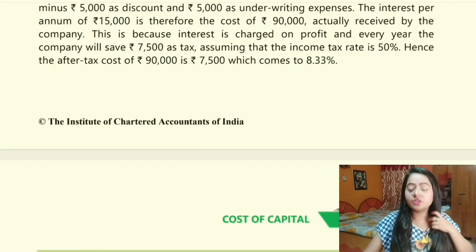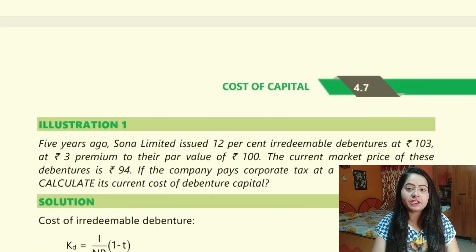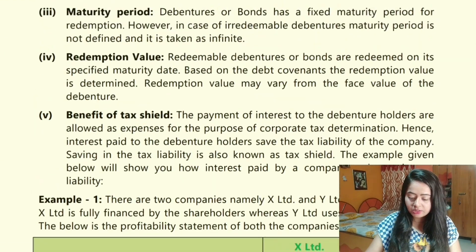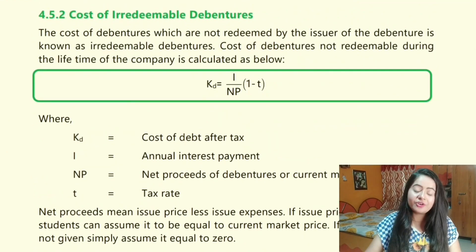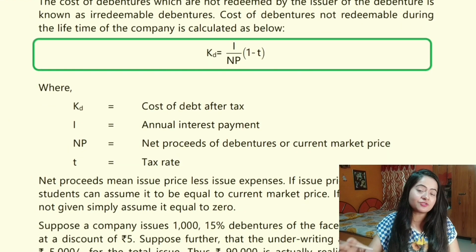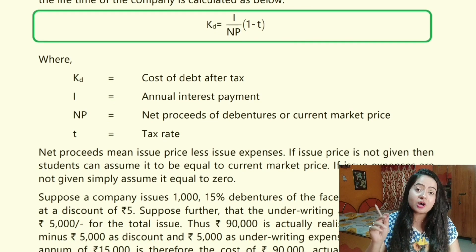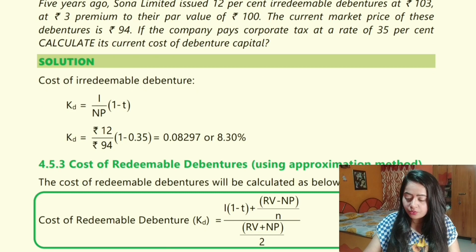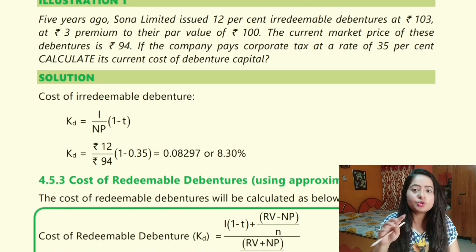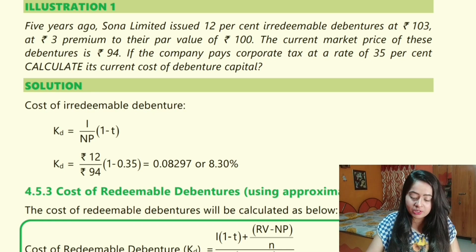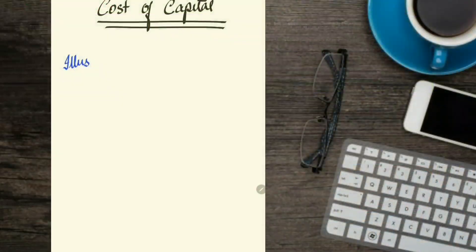Another example: in the cost of capital chapter in strategic financial management, you will come across many different formulas. One formula is the cost of irredeemable debentures. When you come across this formula, write it down in your notes. Along with the formula, you will also have to explain the alphabets covered in it — for example, NPt, Kd. You can also write down a small illustration where this formula is used.